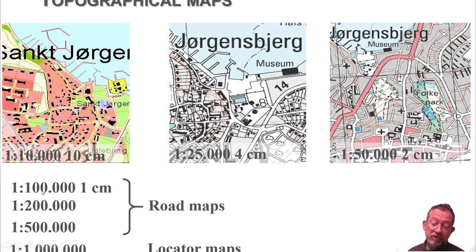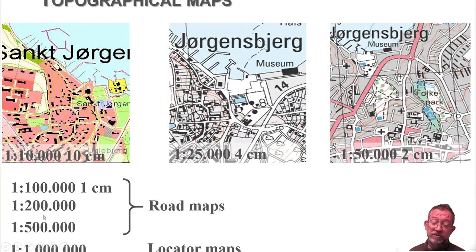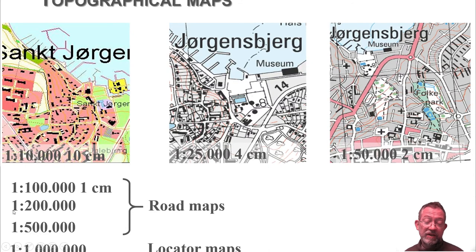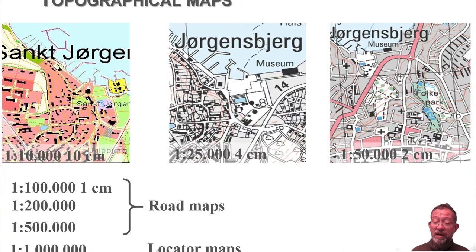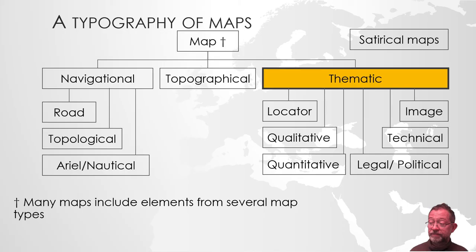Going up in scale to 1:100,000, 200,000, or 500,000 — what we saw as navigational maps — we might call these road maps. At an even smaller scale, 1:1,000,000, we have what we might call locator maps: maps that tell you where one town is in relationship to another, and what is at a given location.